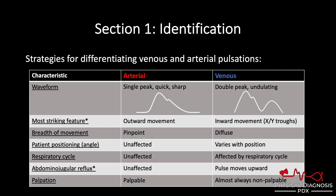Strategies for determining whether you're looking at a venous pulse or an arterial pulse: the waveform itself can be quite revealing. The arterial pulse has a single peak that is quick and sharp. The venous pulse is double and it's undulating in nature, meaning it has a soft rise and fall.